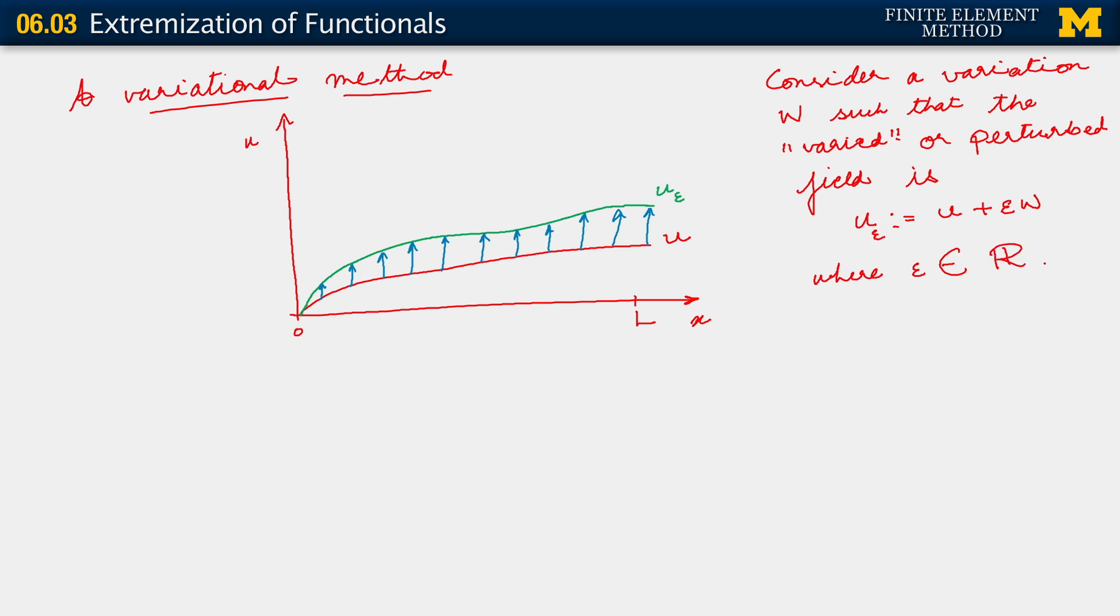As you can imagine now, w is a variation. I'm calling u sub epsilon the varied field. It implies that w is also a field, because u is a field, u epsilon is also a field, and epsilon is just a real number. Obviously, w has to be a field.